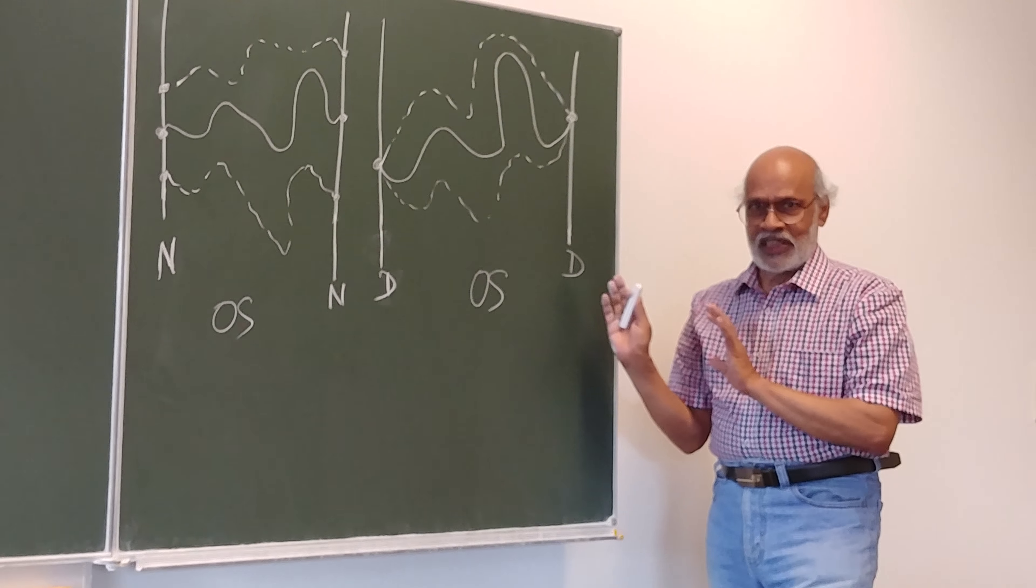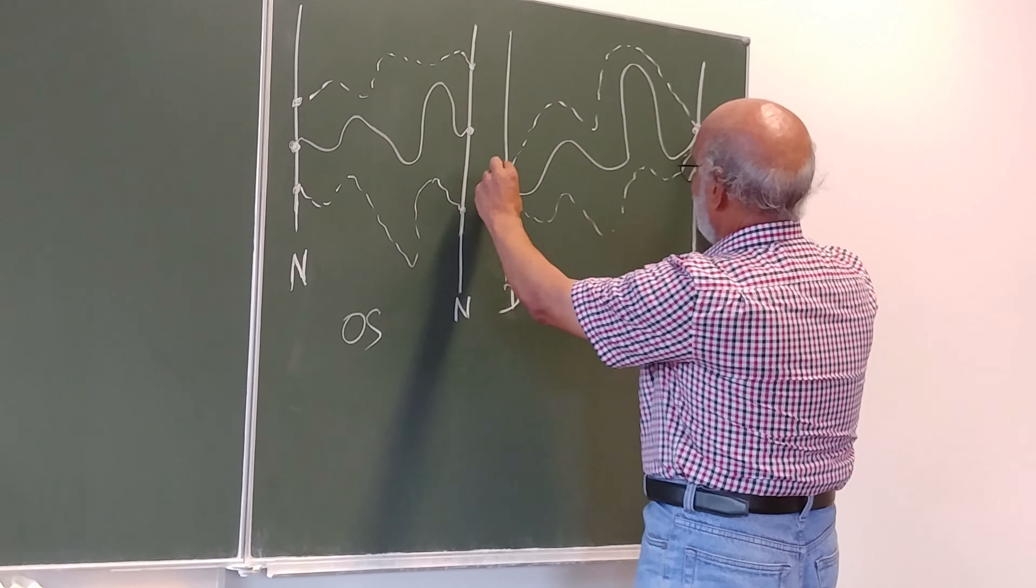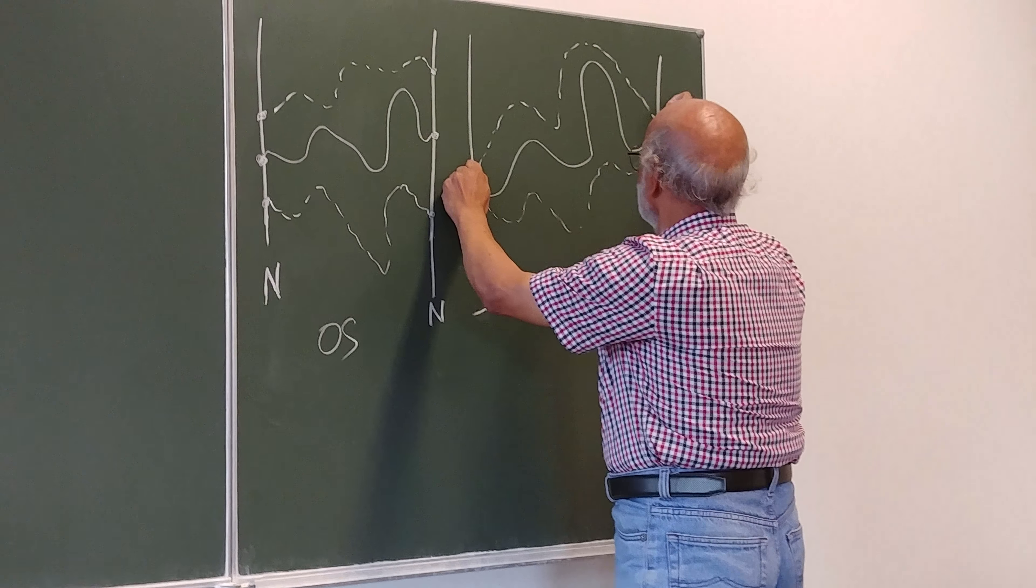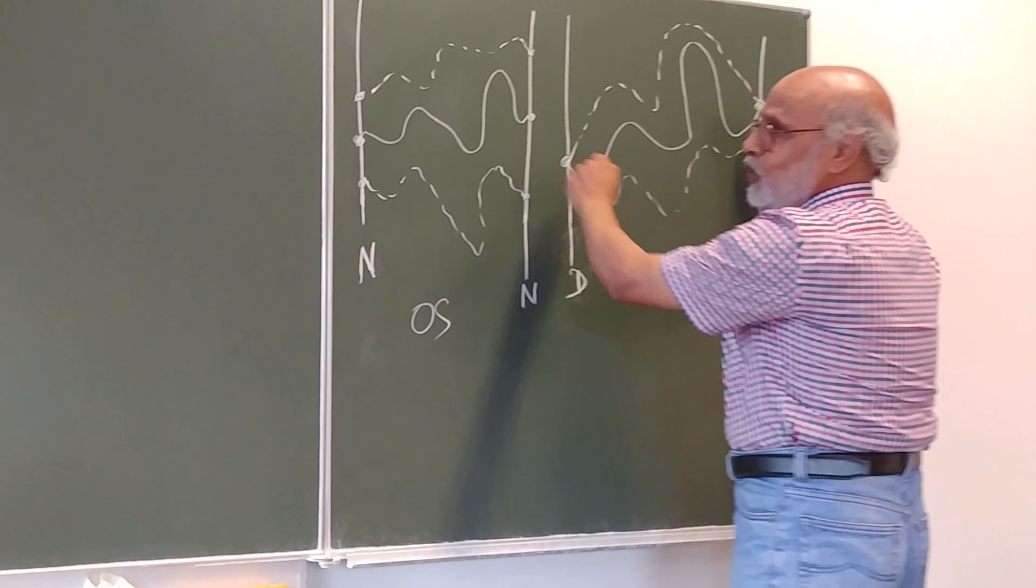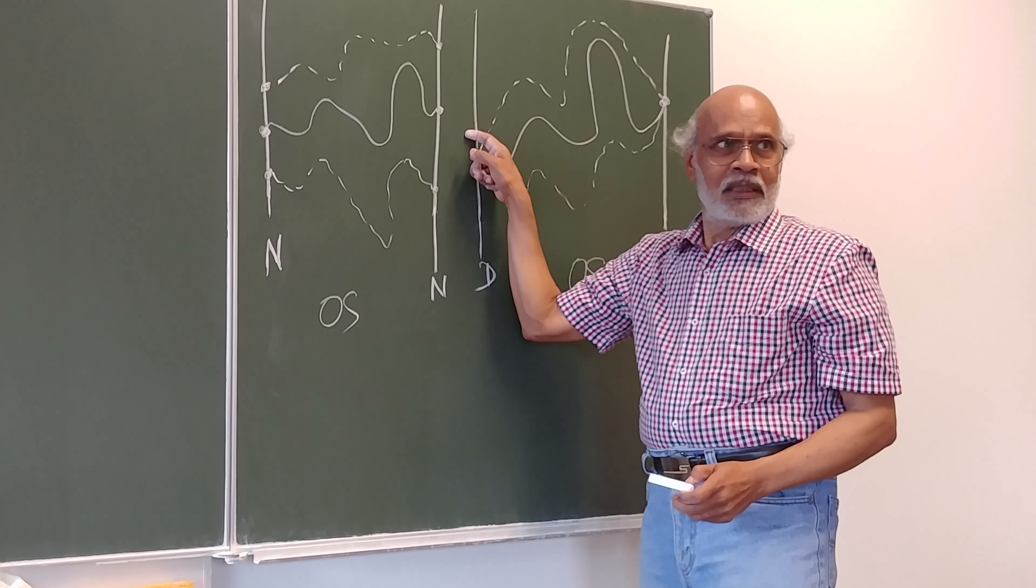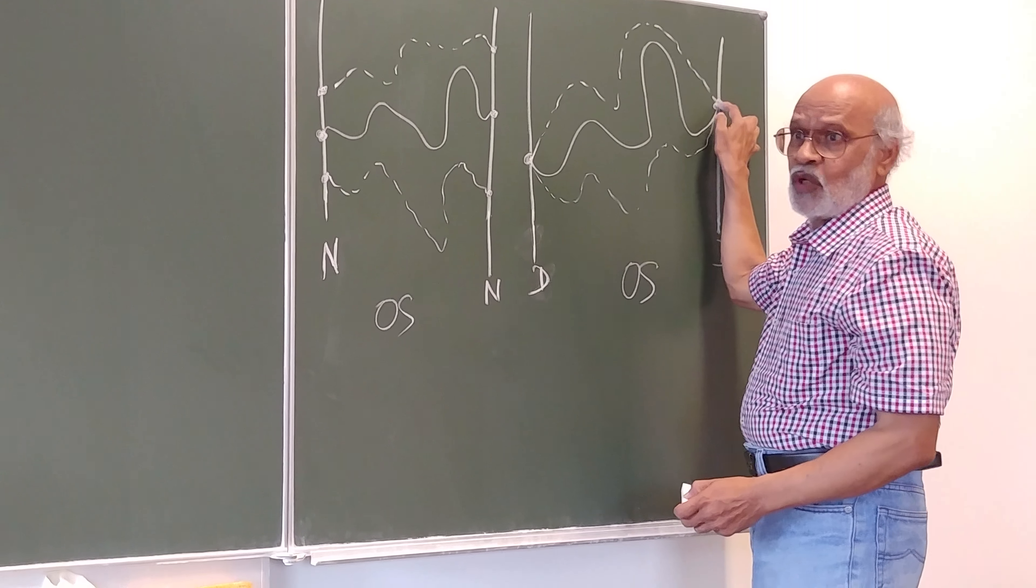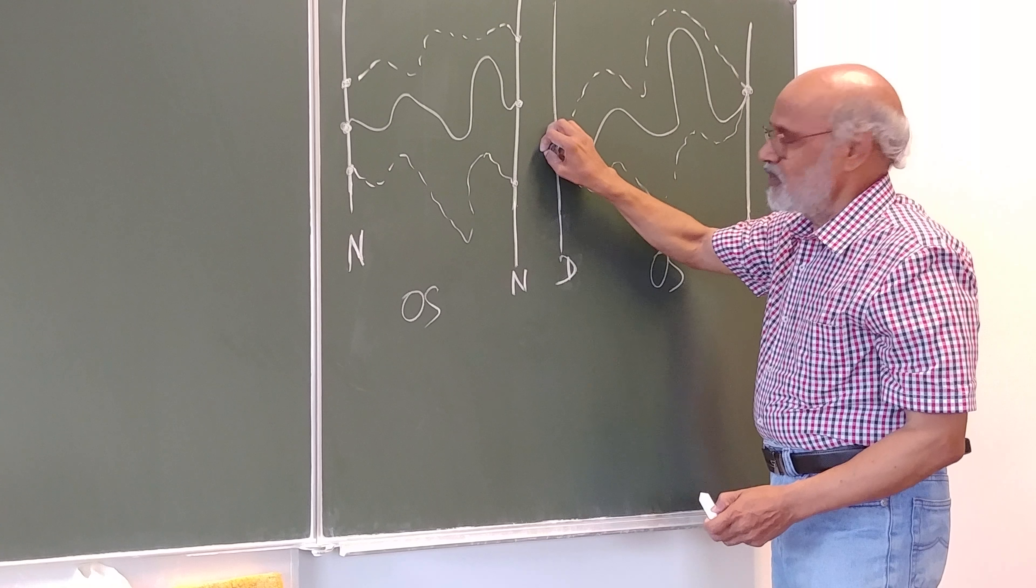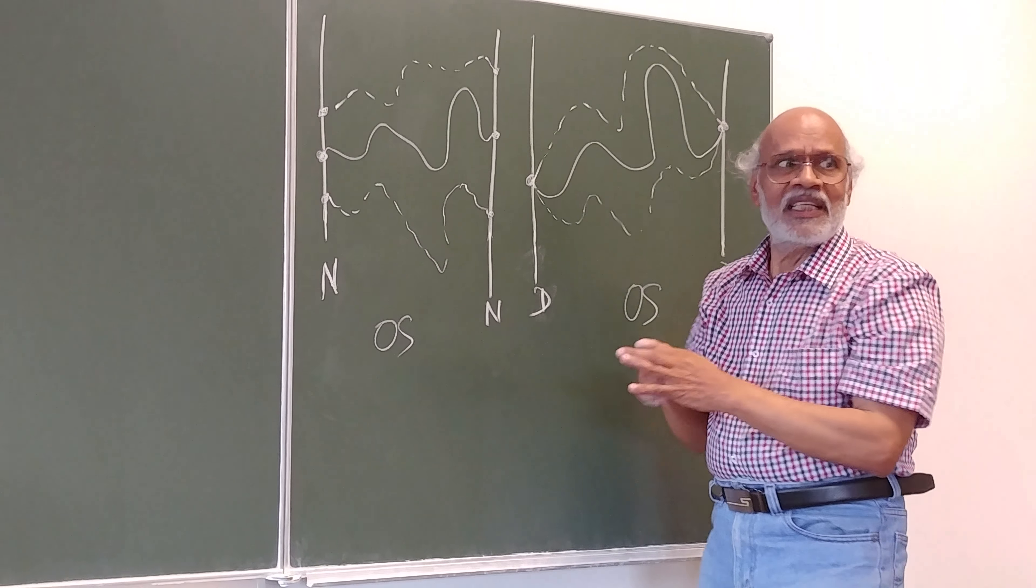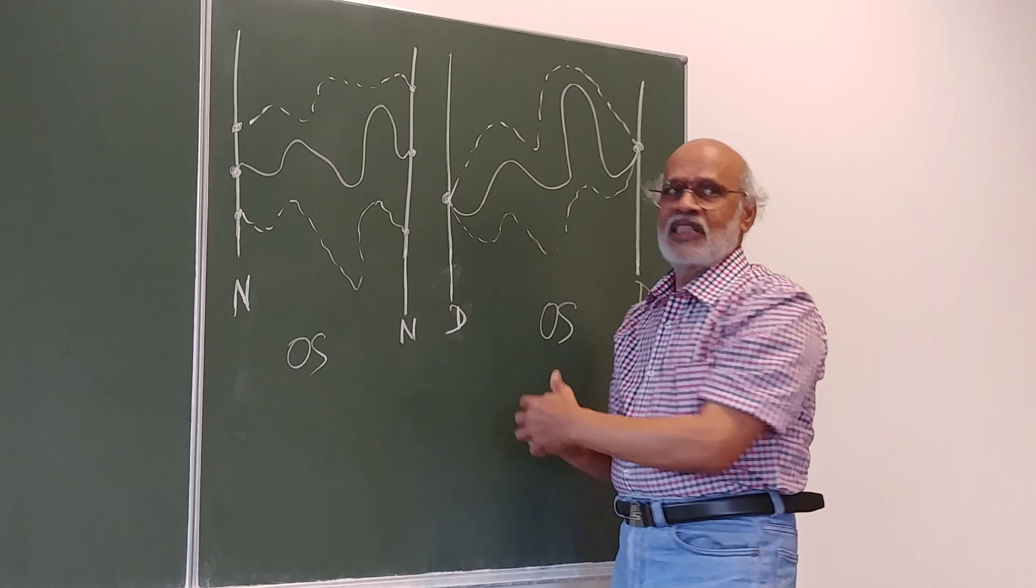both of them correspond to open string examples. In one case, I fixed the two ends of the string. So, that no variation is allowed here. The variation of this coordinate vanishes, variation of this coordinate vanishes, because this is fixed at a particular value. It need not be same. It can be anywhere. Okay, but it's fixed.